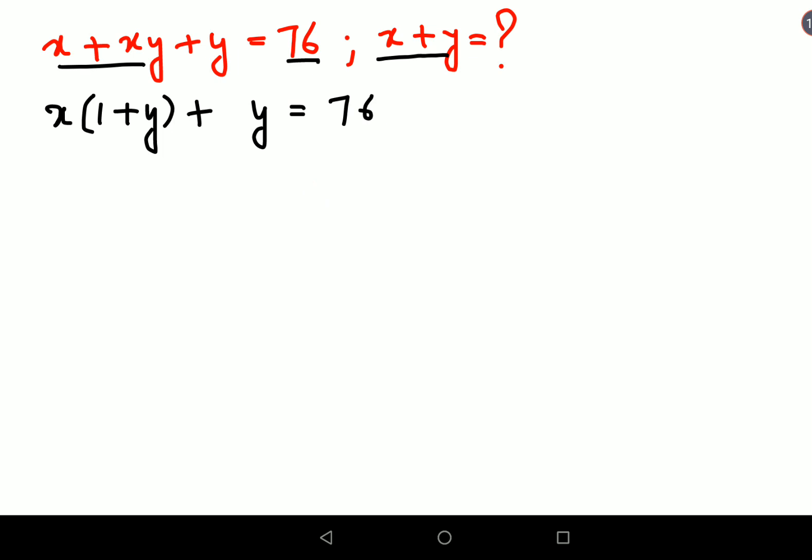Now if you look closely, if I add 1 to both sides, my equation remains balanced but in this process I get (1 plus y) as a common factor on the left side. So I get (1 plus y) times (x plus 1), and this comes out to be 77.